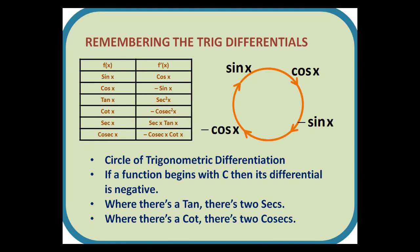To determine the differentials of sin x and cos x, we can use the circle of trigonometric differentiation. Here are some other helpful ways of remembering the table. If a function begins with a c, then its differential is negative. Where there's a tan, there's two secs, and where there's a cot, there's two cosecs.